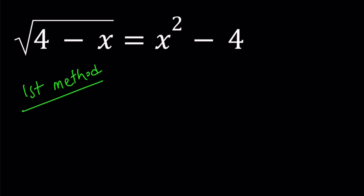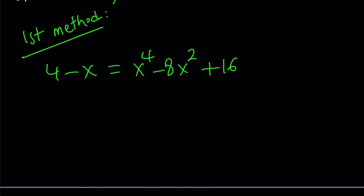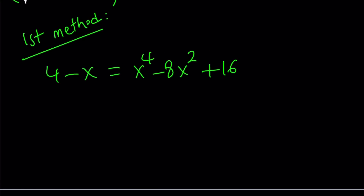My first method is going to be manipulating this equation in an interesting way. We're going to use a parameter — I believe this method was used by at least Black Pen, Red Pen, and possibly some other YouTubers. So let's go ahead and square both sides first. That's going to get rid of the radical. And on the right-hand side, we're going to get x to the fourth minus 8x squared plus 16. Now, here's what I'd like to do: I want to put everything on the same side and introduce a different variable to turn this into a quadratic equation.